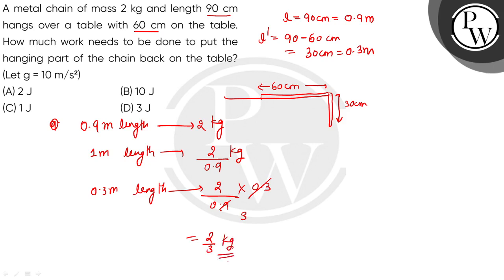This simplifies to 2/3 kg. Because the hanging part is 30 cm, which is 1/3rd of the total 90 cm, so the mass of the hanging part is 1/3rd of 2 kg, giving us 2/3 kg. So the mass of the hanging part, M', is 2/3 kg.